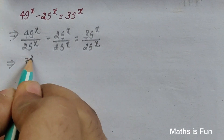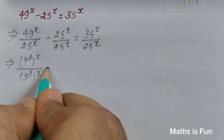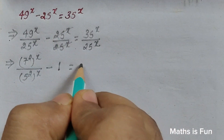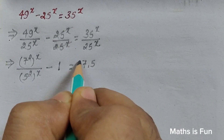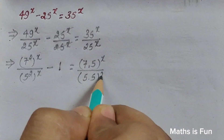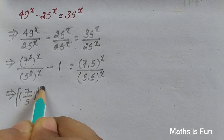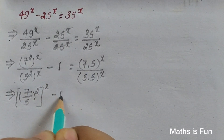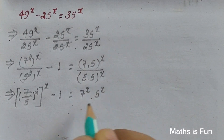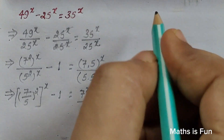Now we can write 49 as 7 squared to the power x, and 25 to the power x over 25 to the power x becomes 1 because they cancel. We can write 35 as 7 times 5 to the power x, and 25 as 5 times 5 to the power x. This gives us 7 over 5 whole squared to the power x, minus 1, equals 7 to the power x times 5 to the power x over 5 to the power x times 5 to the power x.